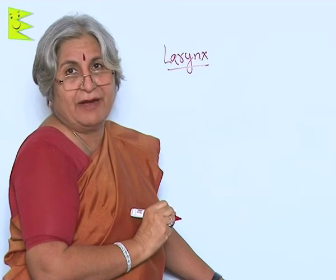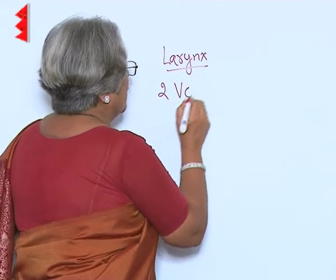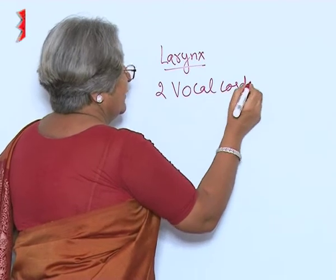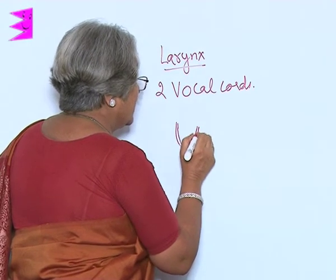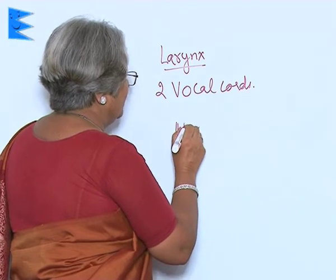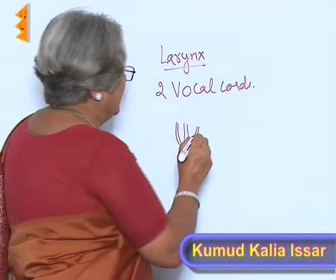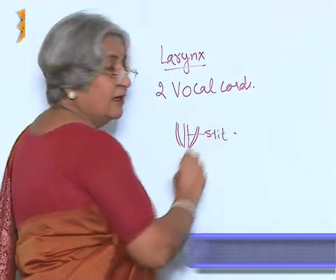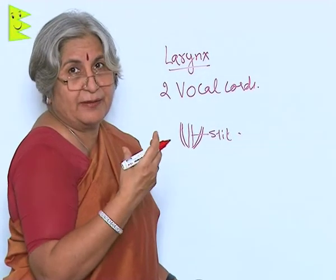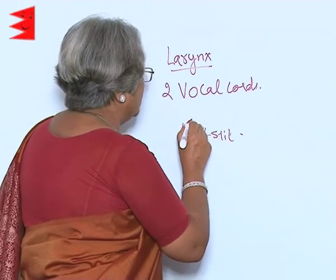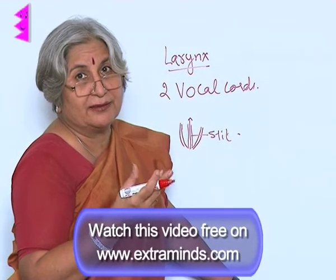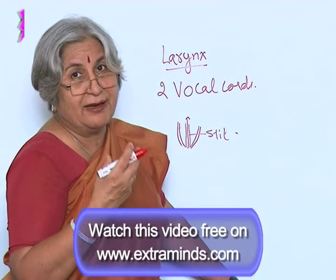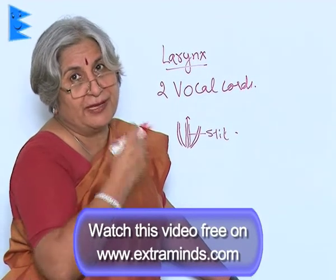If we see the structure of the voice box or the larynx, we find it is made up of two vocal chords. These vocal chords are stretched in such a manner — this is just a rough diagram — which leaves a kind of slit in the center. When we exhale air, or when air is coming out of the lungs and passes through this slit, sound is produced, and that is how we communicate. What I am speaking right now is because of the sound being produced by the vocal chords.